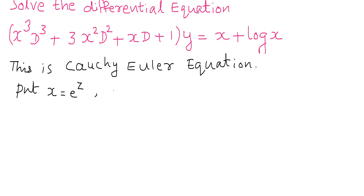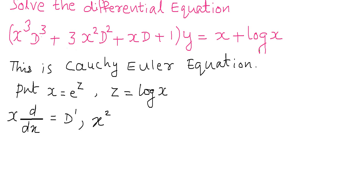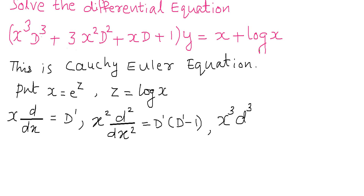After identifying the equation is of Cauchy-Euler form, put x equal to e raised to z, z equal to log x. Replace xd/dx with D', x square d²/dx² with D'(D'−1), and x cube d³/dx³ with D'(D'−1)(D'−2) in the given question.